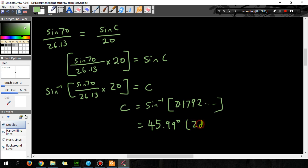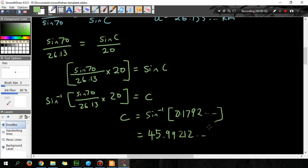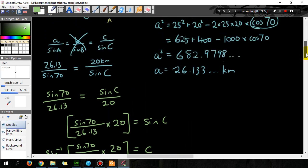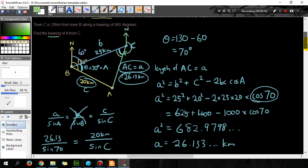Two decimal places. Now you shouldn't round before you get to the final answer, so I'm just going to, 45.99212 and so on. So that's the angle in degrees. So what do I have? I have C, I have this angle here is 45.99.